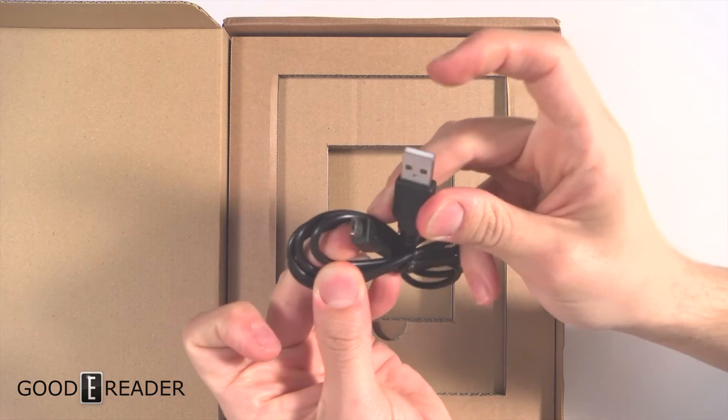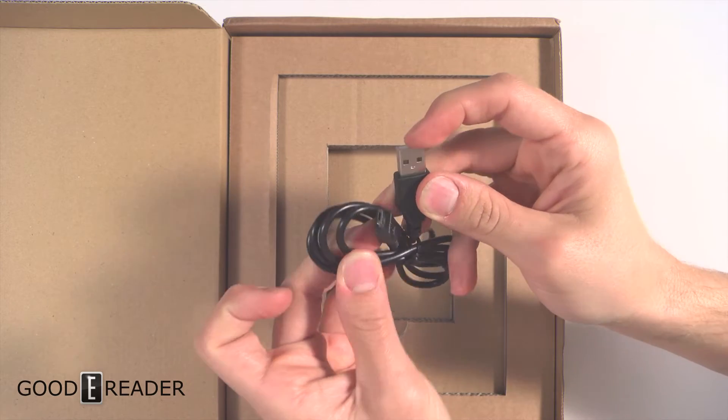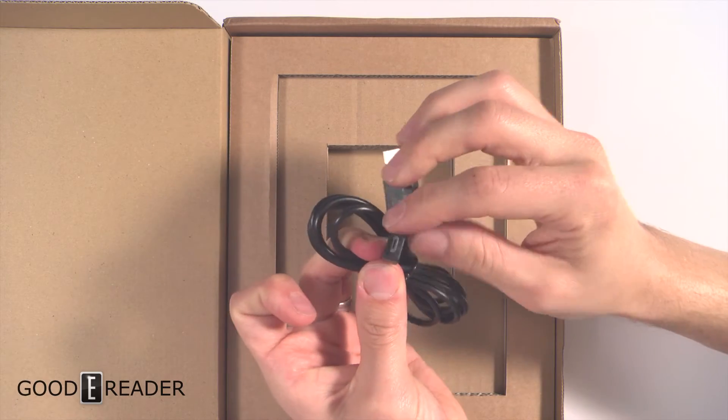This side goes into your PC, laptop, or wall charger, and this one goes into the device to charge it and transfer data to and from the e-reader.